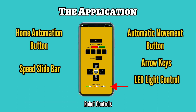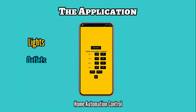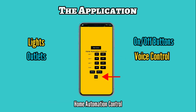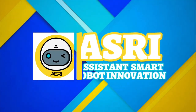It also has a LED light control to change the color of the LED light in ASRI's body. By tapping the home automation button, the app will display the home automation controls where you can control the lights and outlets by tapping the on and off buttons or using the voice control function.